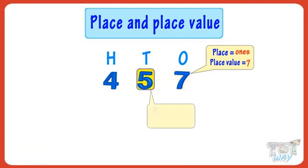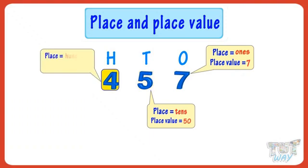Place of 5 is 10's. Place value is 5 tens, that is 50. Place of 4 is hundreds. Place value of 4 is 400.